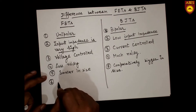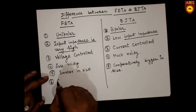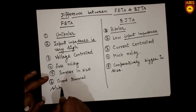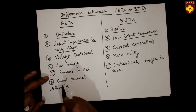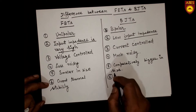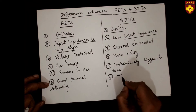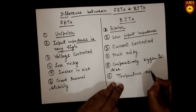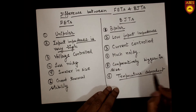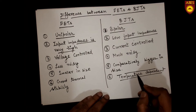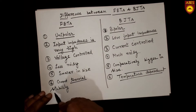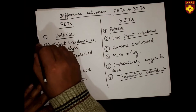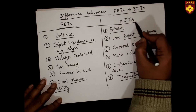Field effect transistors show good thermal stability, meaning their performance does not depend much on temperature. Bipolar junction transistors, on the other hand, are temperature dependent — their performance varies with temperature. These are the main differences between field effect transistors and bipolar junction transistors.